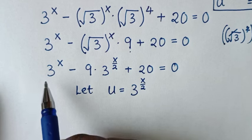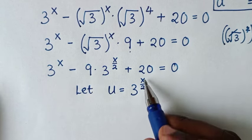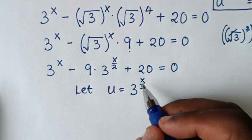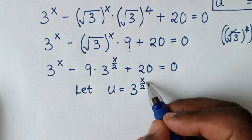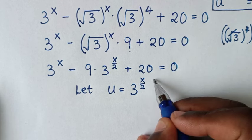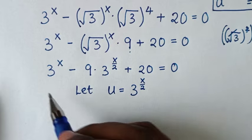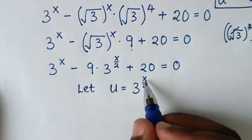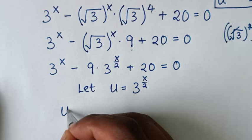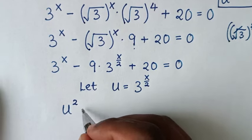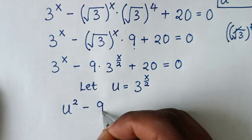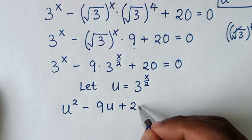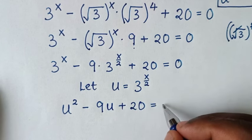Now we compare 3^x with 3^(x/2). When we multiply the exponent by 2, x/2 times 2 gives x, so 3^x equals (3^(x/2))² = u². Therefore the equation becomes u² minus 9u plus 20 is equal to 0.